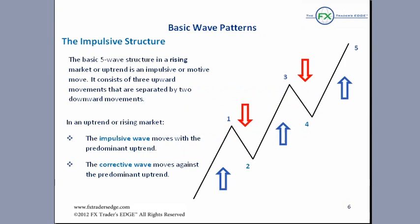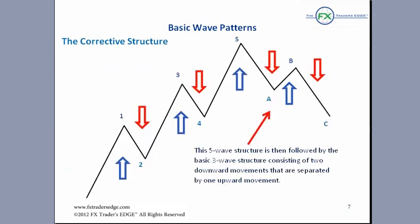The basic five-wave structure in a rising market or an uptrend is called an impulsive or emotive move. It consists of three upward movements separated by two downward movements — this is your basic five-wave structure. The impulsive or trend or motive waves move with the predominant trend. In this case, it's an uptrend, and the corrective wave moves against the predominant uptrend.